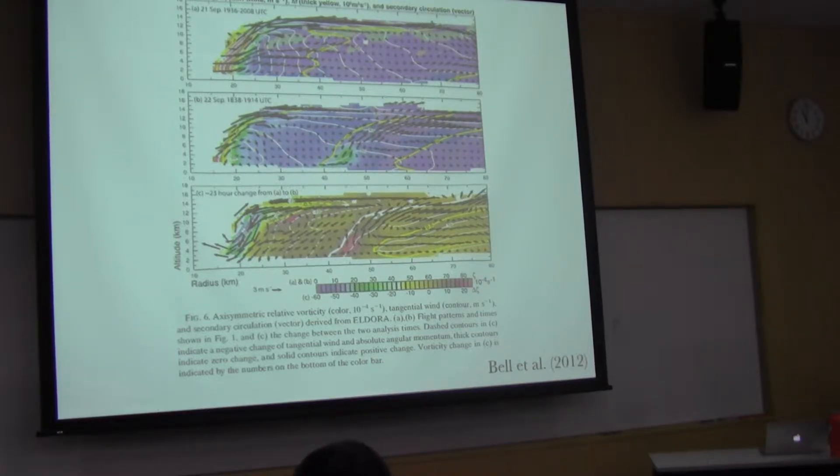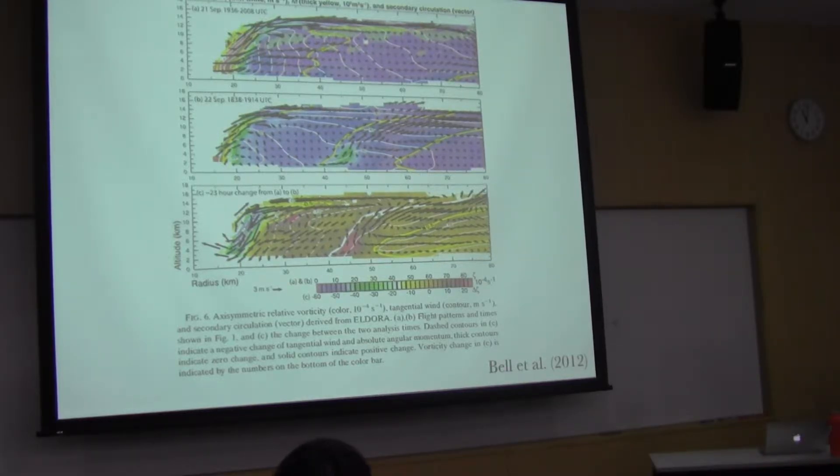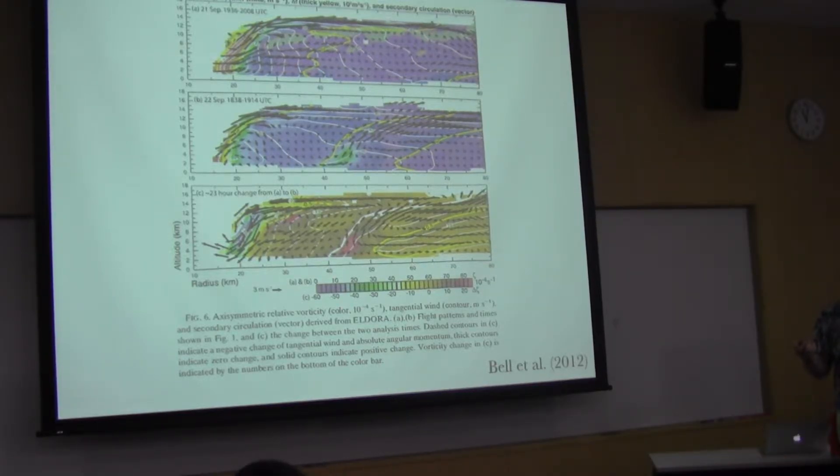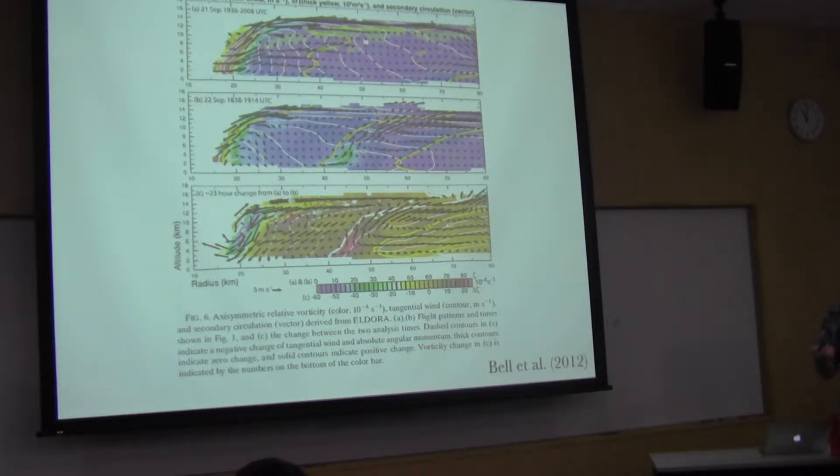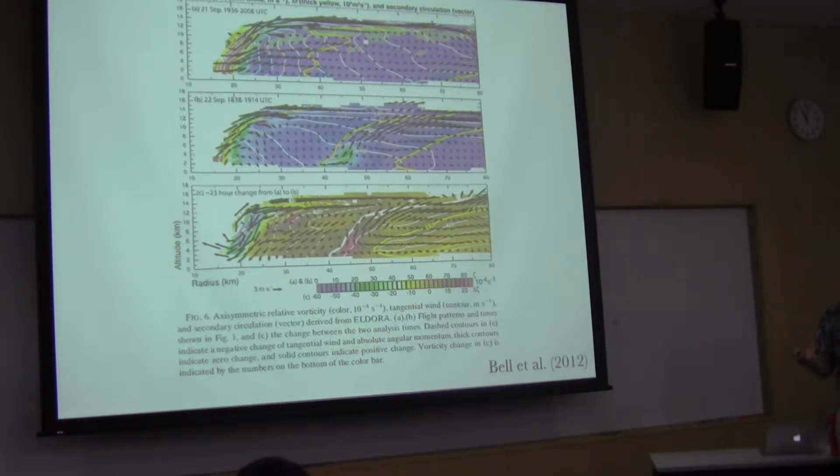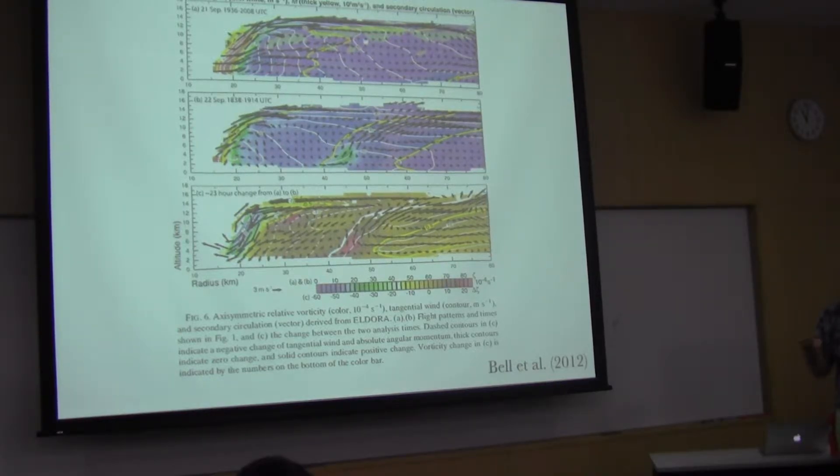A lot of the debate comes from numerical models where we can sample everything all the time. But the magnitude of the supergradient wind depends very strongly on the parameterization used for the planetary boundary layer. Part of Kepert and others' criticism is that they think the supergradient wind magnitude is overestimated in some simulations that Mike Montgomery and Roger Smith have done. For example, with the slab boundary layer model, you get a very strong supergradient wind that's probably an overestimate of what's in reality.